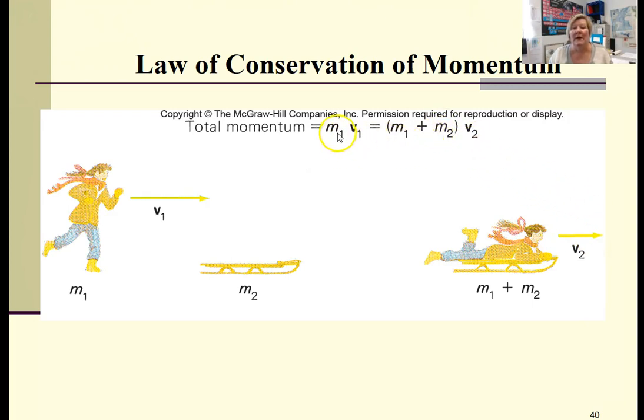In order to have m1 v1 remain equal to m1 plus m2 times v2, what we have to do is decrease the velocity, because we've increased the mass. So if the mass goes up here, we'll have to lower the velocity in order to keep momentum equal in both situations, and in fact we do here.